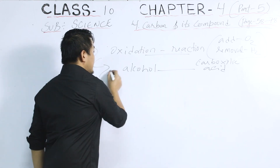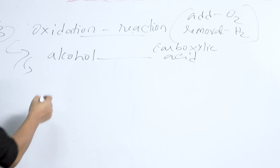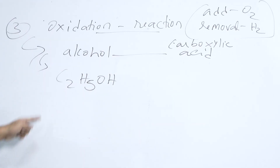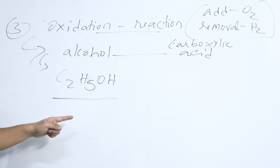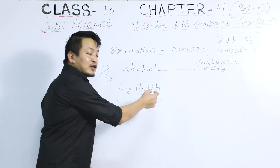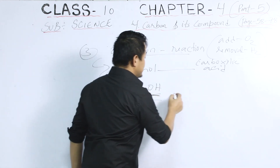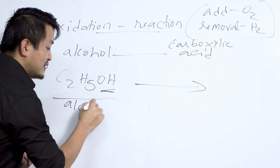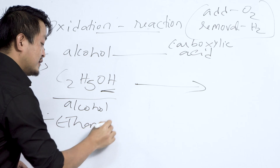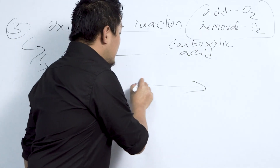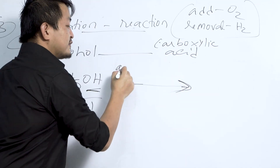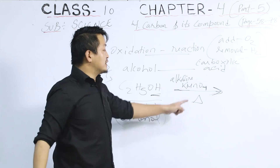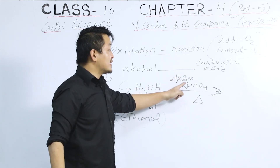Let's look at a true example. Let's take a compound of alcohol — ethanol. This is ethanol, and here the functional group is the alcohol group (–OH). This alcohol, or ethanol, will be reacted in the presence of alkaline KMnO4 — alkaline potassium permanganate.